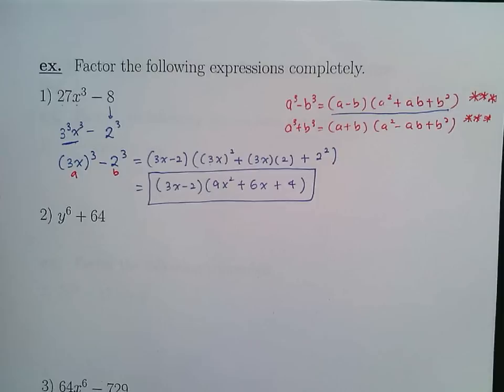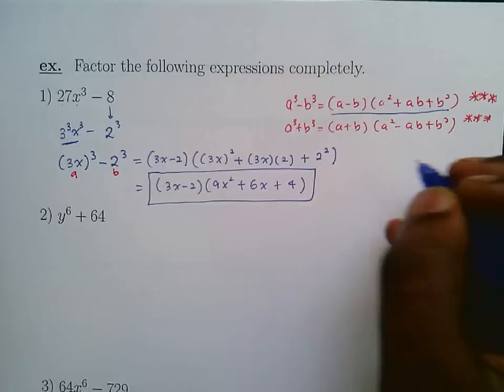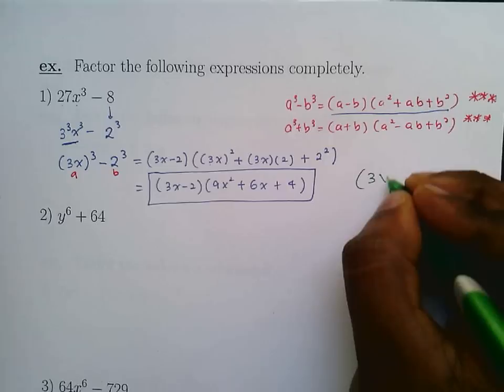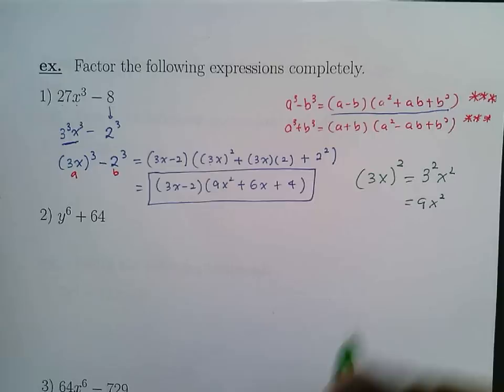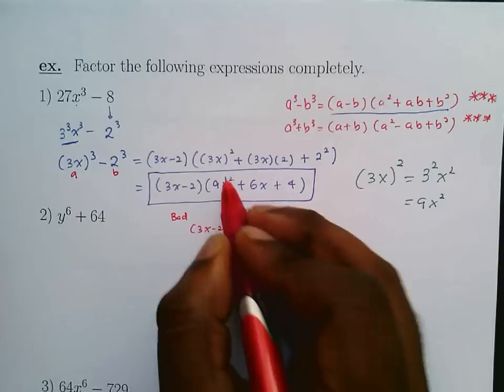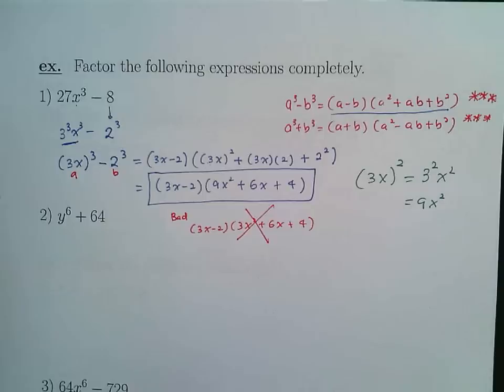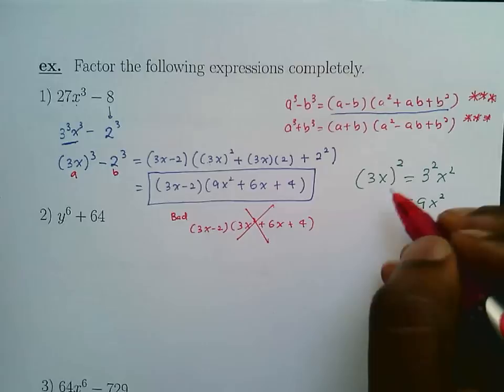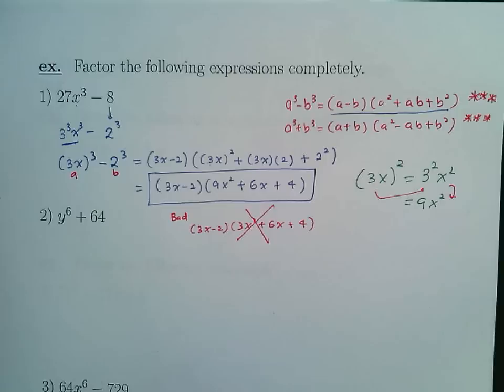An important note: when expanding (3x)², make sure to distribute the power: (3x)² = 9x², not 3x². In multiple choice questions, a common wrong answer would be (3x - 2)(3x² + 6x + 4) — that's incorrect. Always expand carefully.